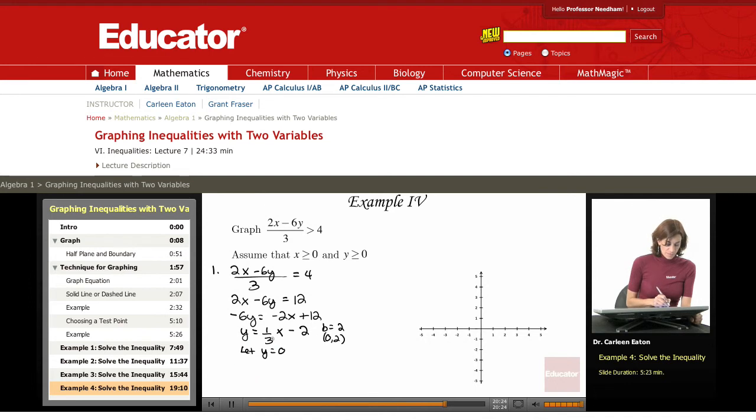I'm going to plug it into here. 2x minus 6y equals 12. Substitute in 0. So I get 2x equals 12, or x equals 6. Therefore, my x-intercept is at 6, 0.